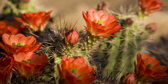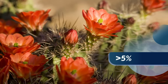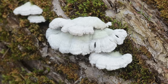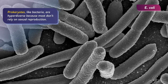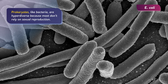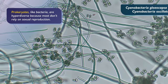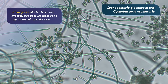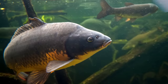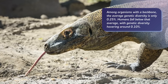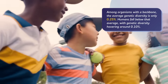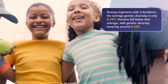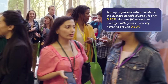Different taxa, or categories of living things, tend to have different levels of genetic diversity. Genetic variation above 5% is considered high in plants, animals, and fungi. But the split-gill mushroom has diversity levels of up to 20%, the highest of any known eukaryote. And then you have prokaryotes, like bacteria, that are hyper-diverse because most don't rely on sexual reproduction — they get their diversity in a completely different way, that we'll discuss in a future episode. Among organisms with a backbone, the average genetic diversity is only one-quarter of 1%. Humans fall below that average, with genetic diversity hovering around one-tenth of 1%, which might account for all these doppelgangers out there.